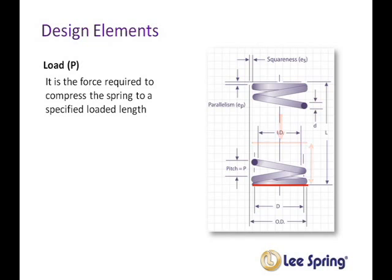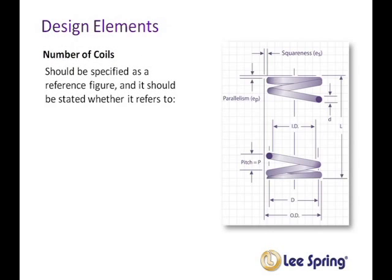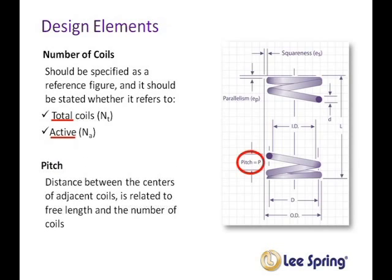Another important element is a spring's solid height. The solid height is the dimension of a spring when all the coils are closed. This dimension, if critical to an application, should be specified as a maximum dimension. The number of coils should be specified as a reference figure and should state whether it refers to total coils — which includes all coils including those used to form the ends that may not deflect under load — or active coils, which are those coils free to deflect under load. Pitch is a dimension related to the distance between the centers of adjacent coils.